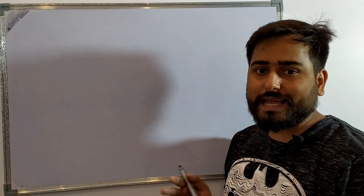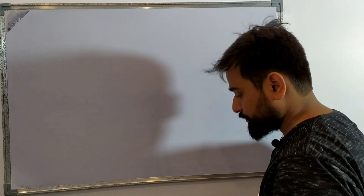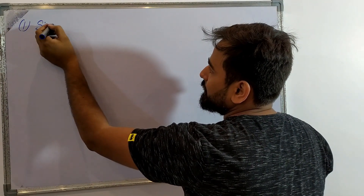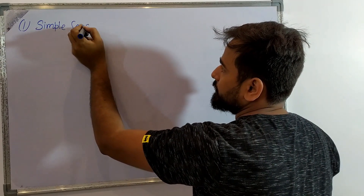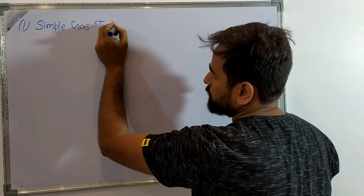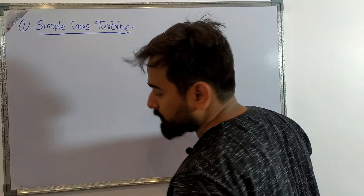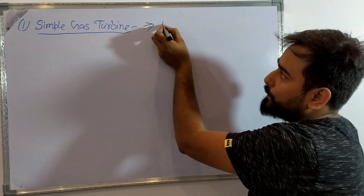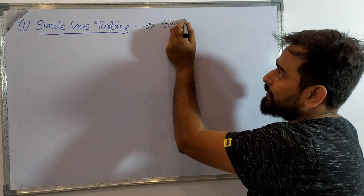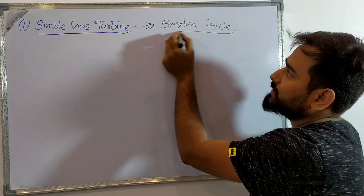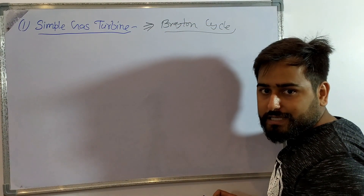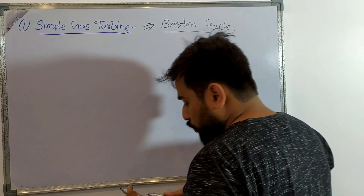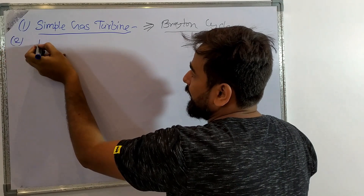So let's see our syllabus. The first thing we need to study is Simple Gas Turbine. This will be our first topic, and we will study the Brayton cycle, including cases like regeneration and reheating — all those will be covered in the first chapter. After that, we will start the Rankine cycle.